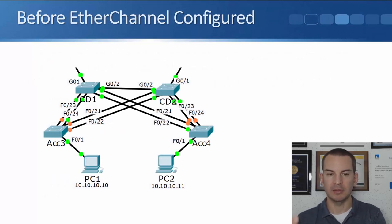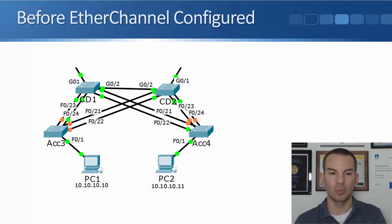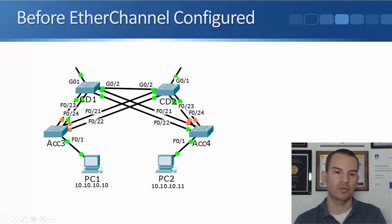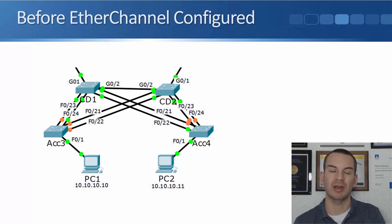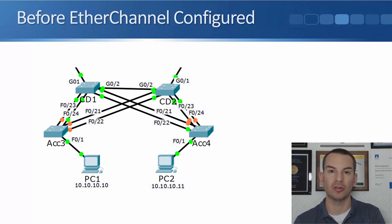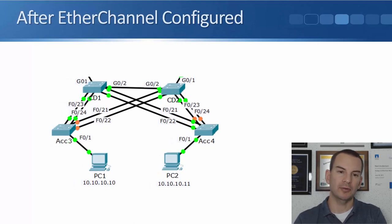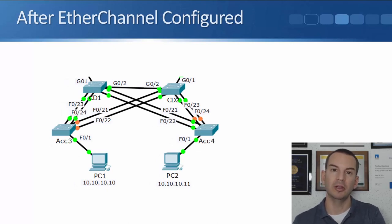We configured that same topology in the lab in the last lecture. Things were better after we configured EtherChannel — before that, CD1 was the root bridge and Access 3 had four physical uplinks, but only one forwarding, and exactly the same on Access 4. After we configured EtherChannel, two out of the four are now forwarding traffic rather than one, so it's better.